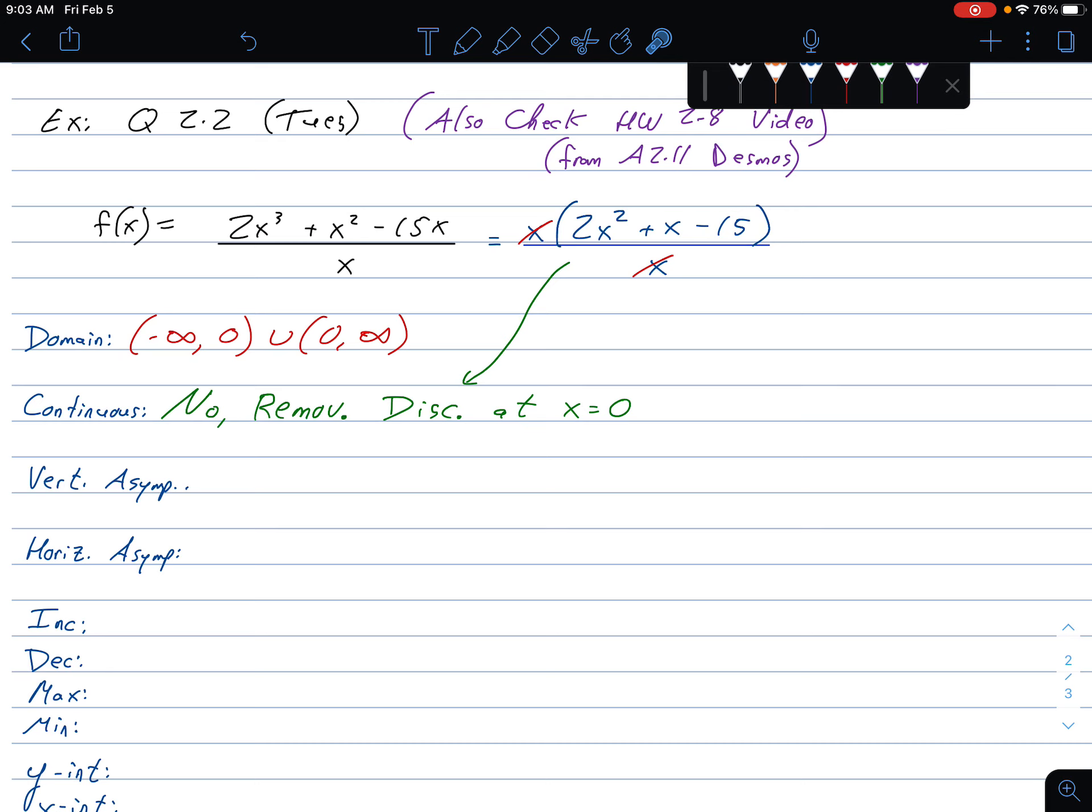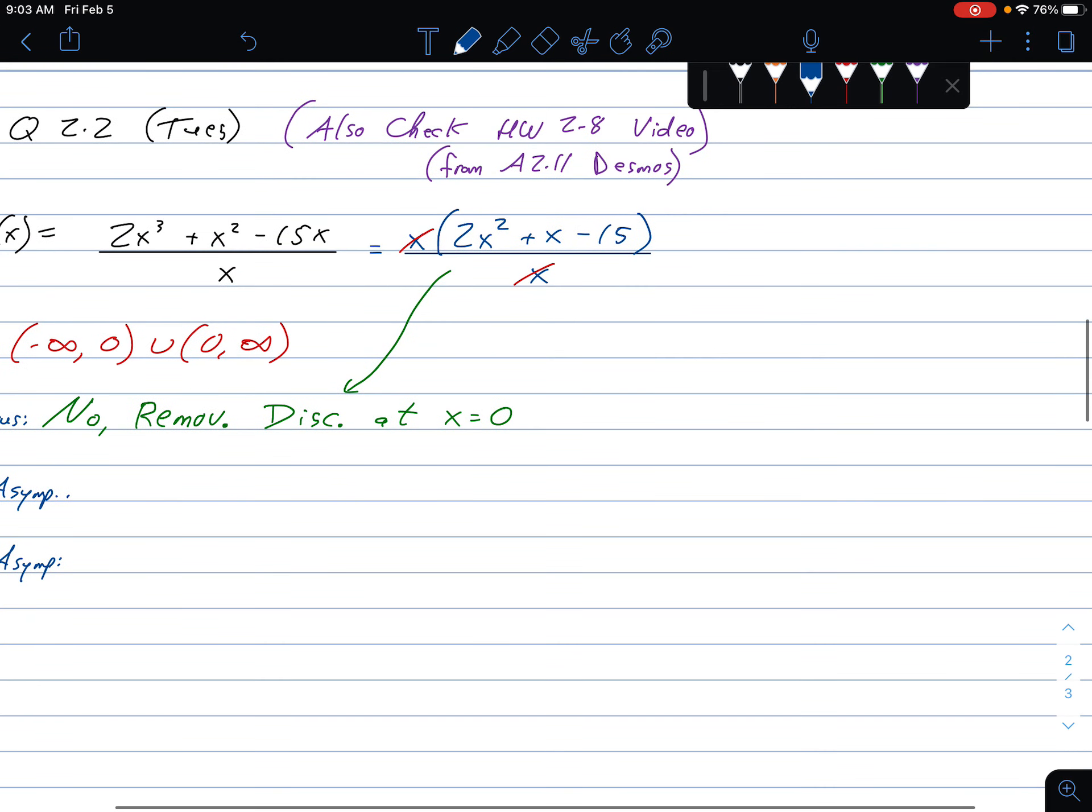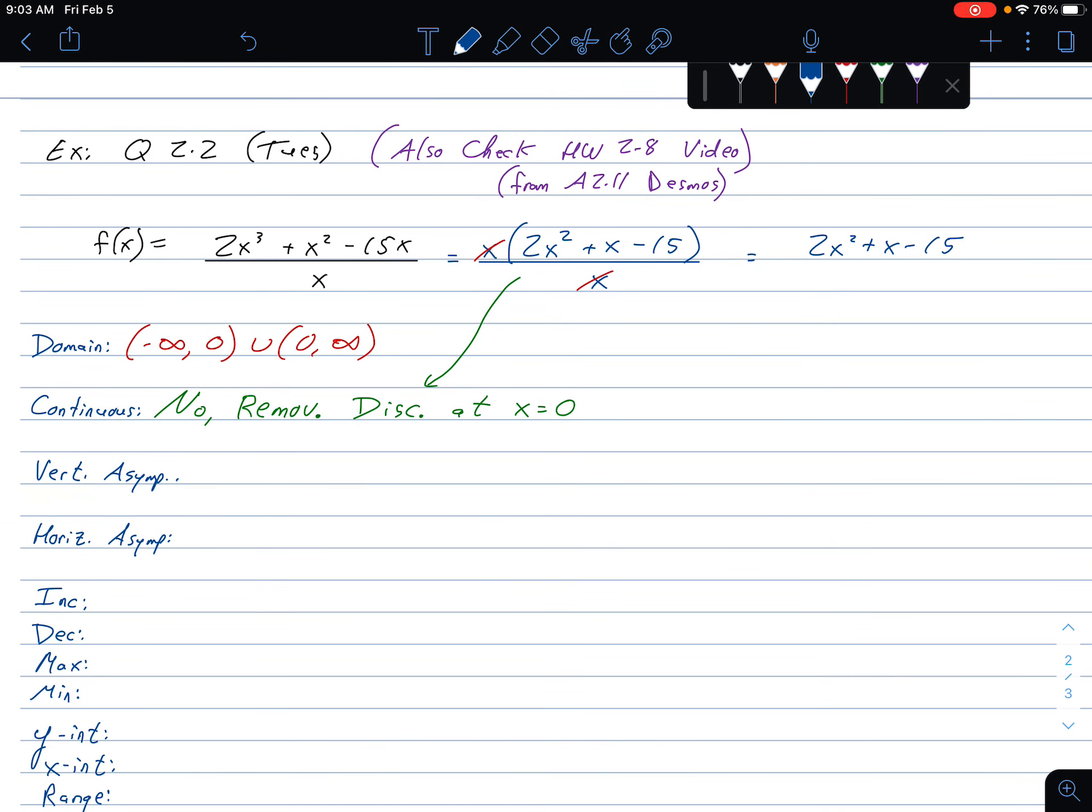So, that means, is there a vertical asymptote? Well, it doesn't look like it, because I'm going to have this left over, over 1, over nothing. This is what's left over, over nothing. So now there are no more problems once I remove that discontinuity. So there is no vertical asymptote. So I'll finish factoring this in a moment.